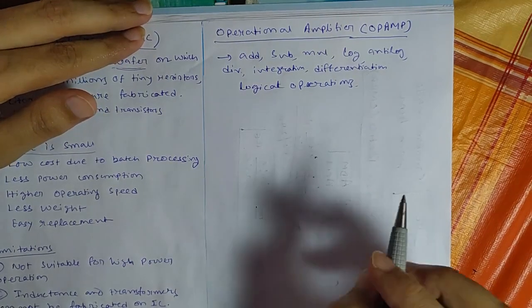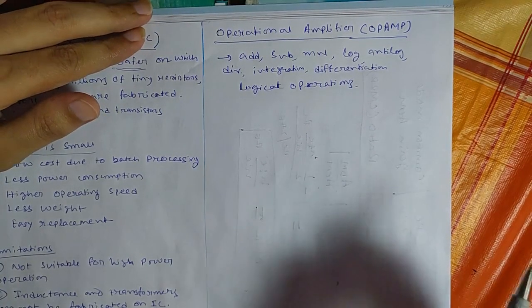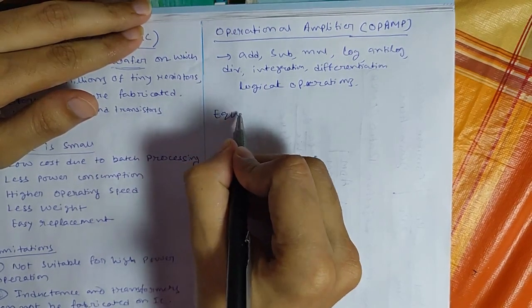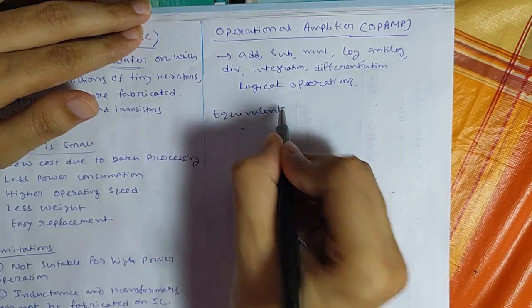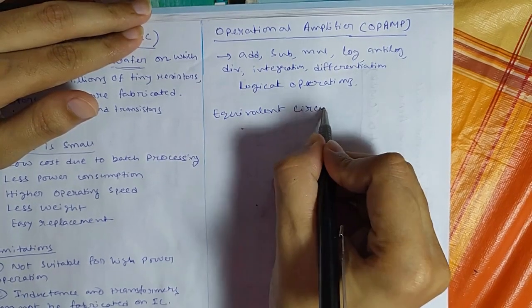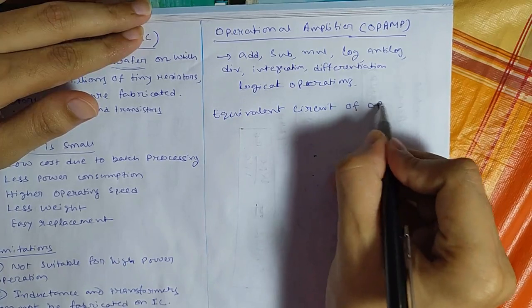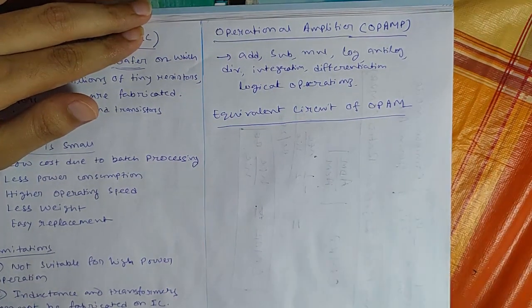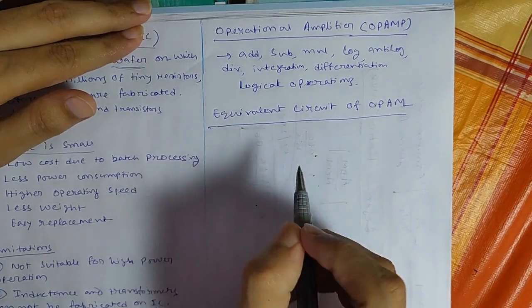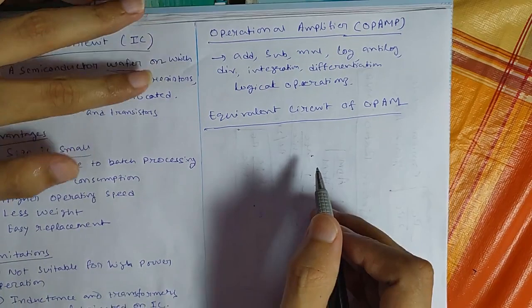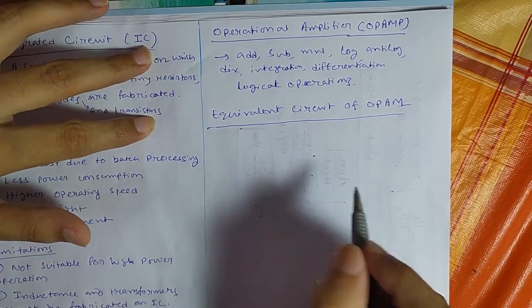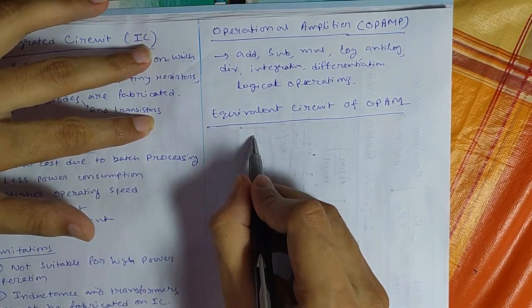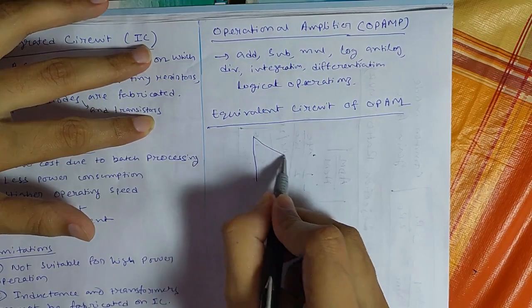Now we'll draw the electrical equivalent circuit of the op-amp. So before that we'll draw the symbol of the op-amp then we'll draw the electrical equivalent of this symbol. So op-amp symbolize like this.